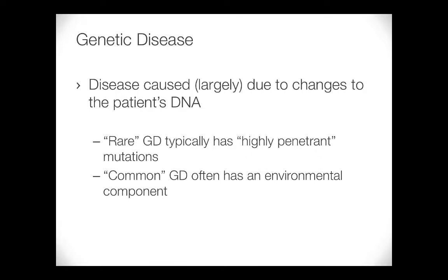Diseases caused largely due to a patient's DNA we call genetic. People typically split into rare genetic disease and common genetic disease — it's obviously a continuum. On the ultra-rare side there will be diseases you've never heard of unless you watch Dr. House, and on the common side things like type 1 diabetes or autism. Rare genetic diseases are typically caused by highly penetrant mutations — what does 'highly penetrant' mean?